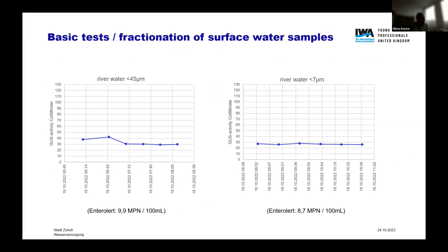As a next step, I made a fractionation of the surface water samples, because in these rivers you have bigger and smaller particles. With a cutoff at 45 micrometers, river water gave a little more scatter. With a cutoff at 7 micrometers — or below 7 micrometers — the measurement was quite reproducible, and I got around 8 to 9 most probable numbers from the Entralert test.